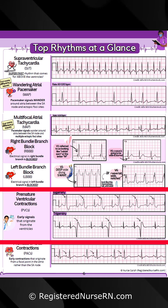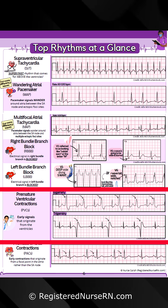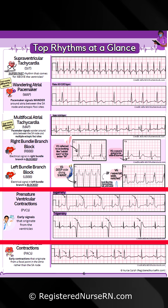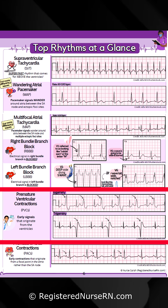Premature ventricular contractions, or PVCs, are early signals that originate from the ventricles. Here's an example of bigeminy and trigeminy. With bigeminy, you have a PVC every second beat, and with trigeminy, you have a PVC every third beat.